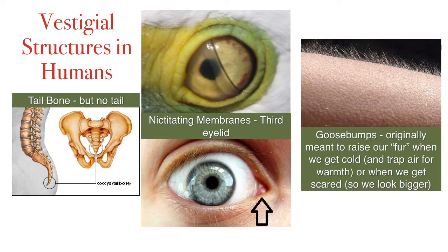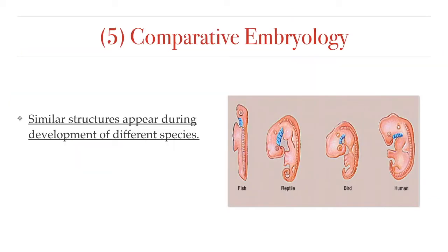There are many more examples of vestigial structures, some even in humans, and I could make an entire video lesson just talking about them. But we do need to move on, and there is still one more comparative anatomy evidence of evolution, and that is comparative embryology — the comparison of embryos of different species.